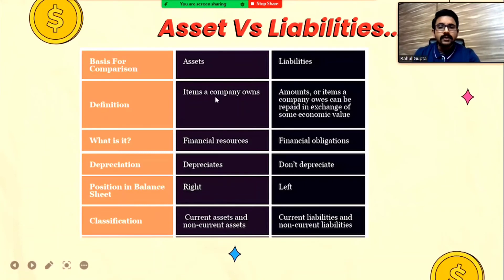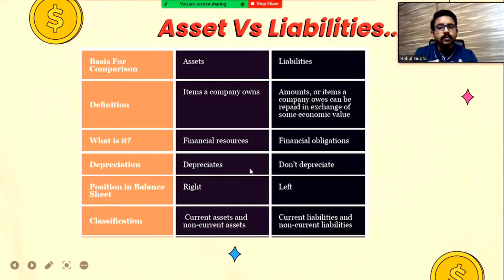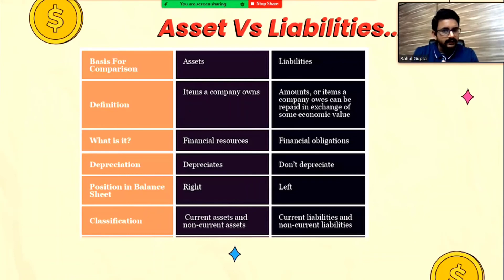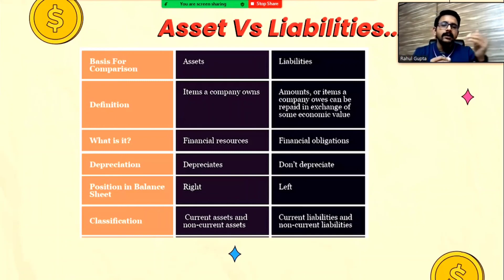We can classify assets and liabilities into two buckets: current and non-current. The classification is based on time period. If you are able to liquidate or encash an asset within one year, it is called a current asset; if it takes more than one year, it is a non-current asset. The same applies to liabilities — if you plan to pay a loan within one year, it is a current liability; if more than one year, it is a non-current liability. For example, if you take a loan of 10 lakh on EMI, the 12 EMIs you pay within one year are current liability, and the remaining tenure payments are non-current liability.